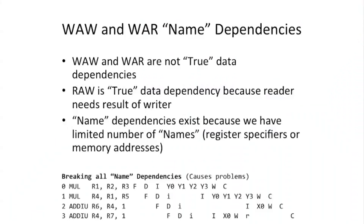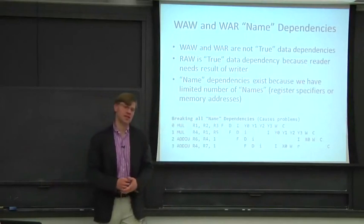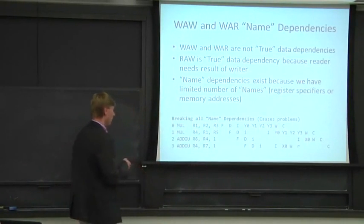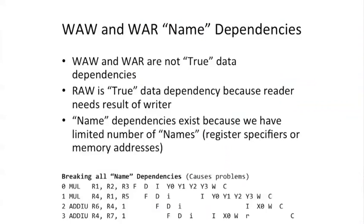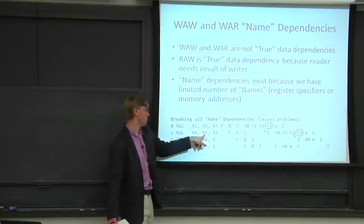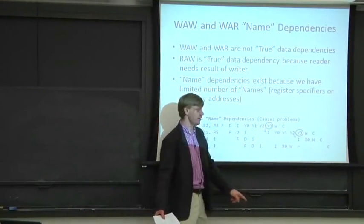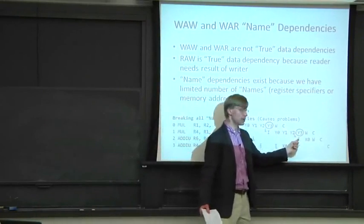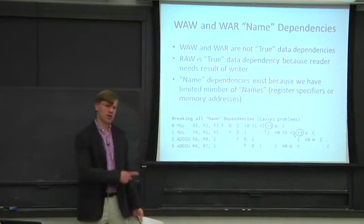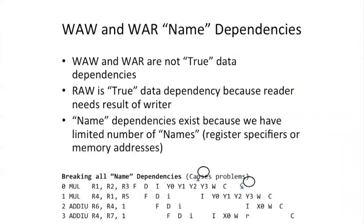Let's look at some example code here and see what can go wrong if you just ignore all the name dependencies. They're not true dependencies, so maybe we just don't need them. We have a code sequence with a multiply, multiply, and two add immediates. Let's identify the true read-after-write dependencies — I've put some circles and arrows here. This first instruction writes register one, and the second multiply reads the result of that. This add reads register four, and the previous instruction writes register four — that's a true dependence. We can't break those.